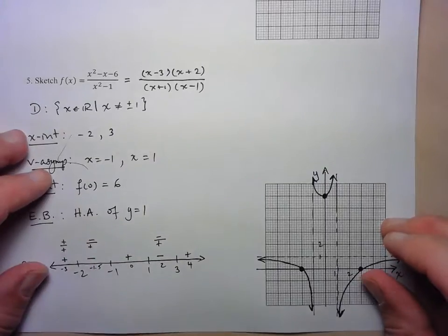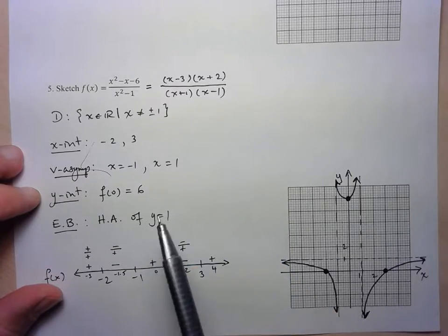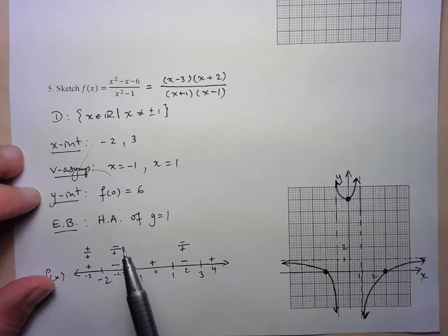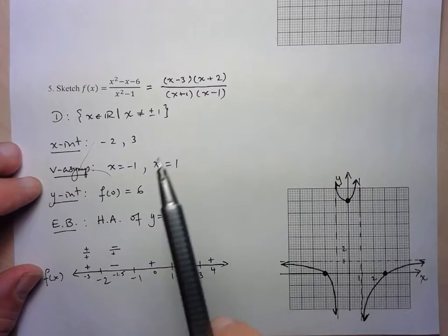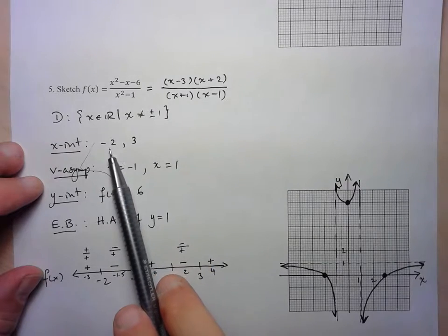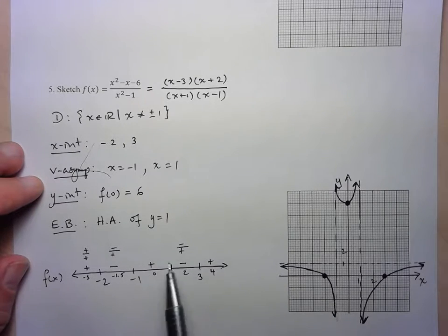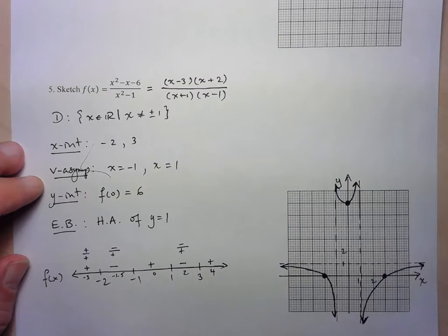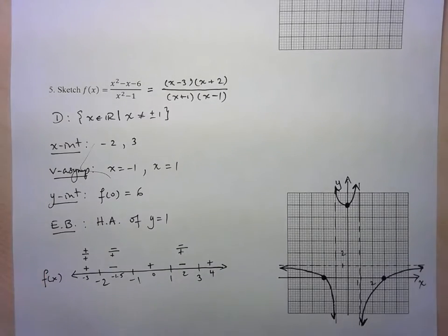This example was much simpler than the previous one — no hole, no oblique asymptote requiring polynomial division, and simpler factoring. But we followed the same procedure: factor, check for simplification, determine domain, x-intercepts, vertical asymptotes, y-intercept, end behavior, use a number line for sign analysis, then draw the graph. Check it on Desmos and you should see something similar. That's it for this lesson.